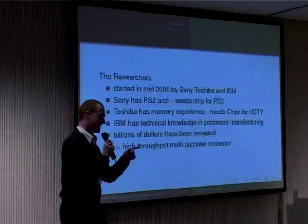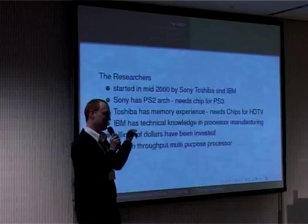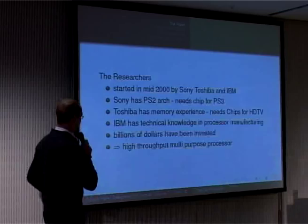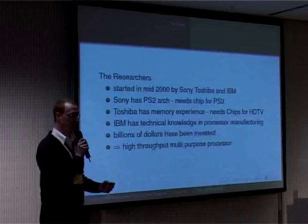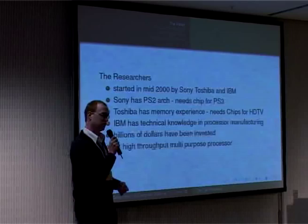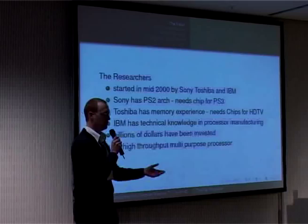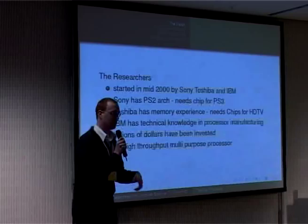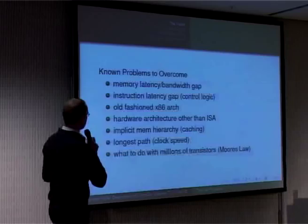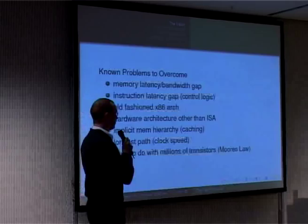The Cell design approach is actually very old — it goes back to Cray — but they brought it to a new level. All together they invested billions of dollars, made a totally new research facility, and built everything from scratch. They wanted to propose a high-throughput multipurpose processor — high-throughput because of the new multimedia design. Everybody wants to support multimedia, HDTV, and video games, where you need very high throughput. There are several problems with current architectures, for example the memory latency bandwidth gap of the von Neumann principle, which is a huge problem you can't get around without inventing a new architecture.